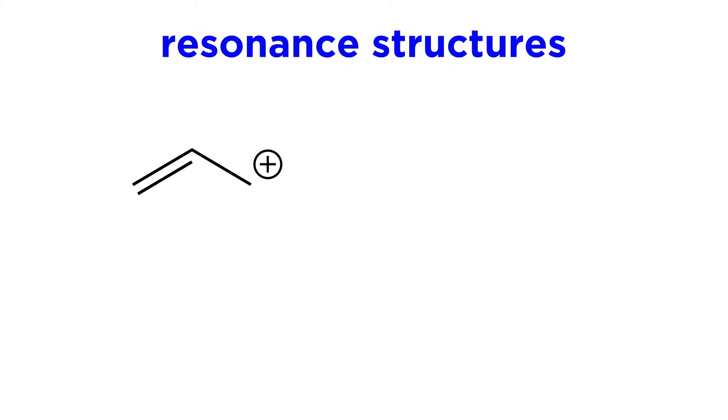Now, as we said before, pi electrons can be delocalized if there is another configuration that will accommodate them. Well, this carbon can certainly accept another bond, which will neutralize the positive charge, so we can push this pi bond over one spot to do so.